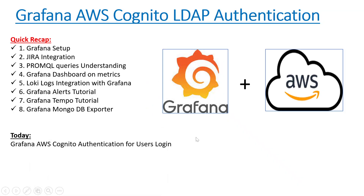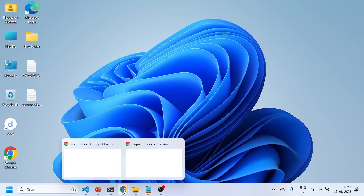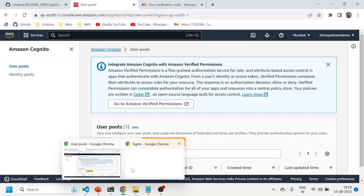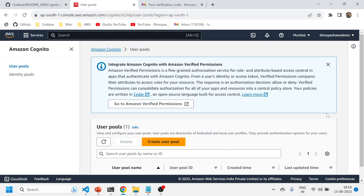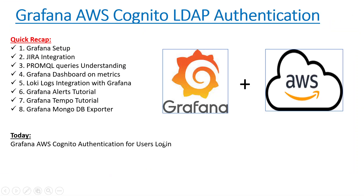This is actually part one of this video. In part two, we'll create three sets of groups — editor, admin, and viewer — because currently I'm not able to see any data in Grafana, which needs to be resolved. We'll create three groups and see what kind of role-based access we're giving to Grafana. Try it on your local Minikube cluster — if you have any doubts or issues, write in the comment section. If you haven't subscribed and liked the channel, please do so to get all details related to Grafana and DevOps. Stay tuned — bye for now!